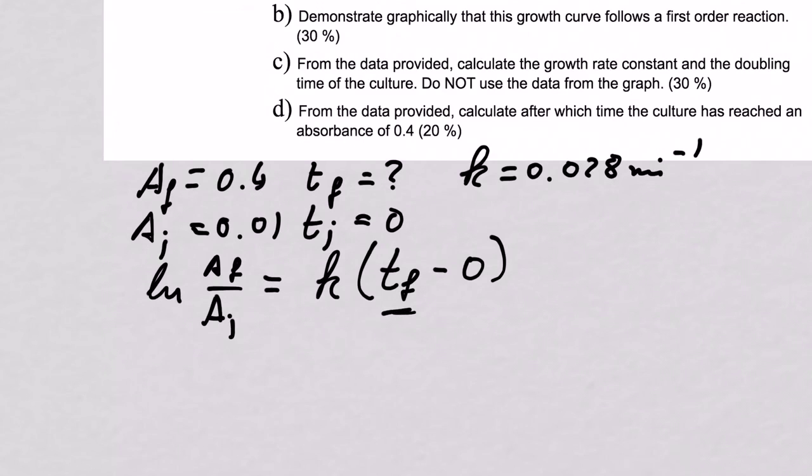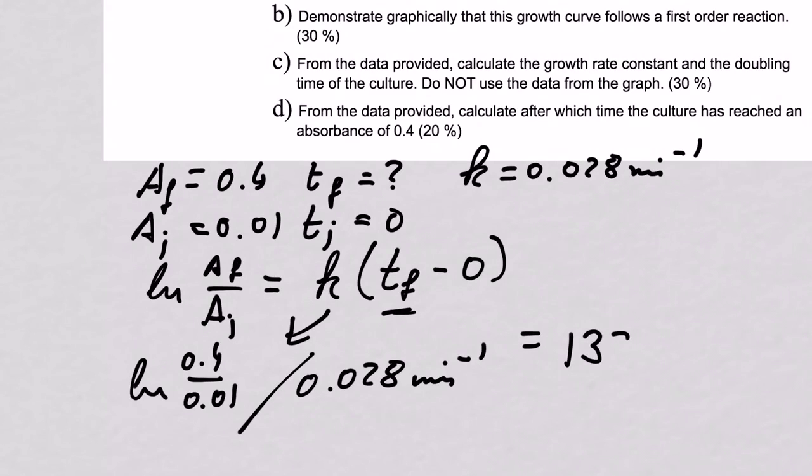And in order to get this t final, we bring the k to this side and we have ln A final 0.4 divided by 0.01 divided by 0.028 minutes to the minus 1. And if you do this calculation, you will get roughly 132 minutes. And again, you need to have the right unit. So I hope this makes sense. And thank you for watching.